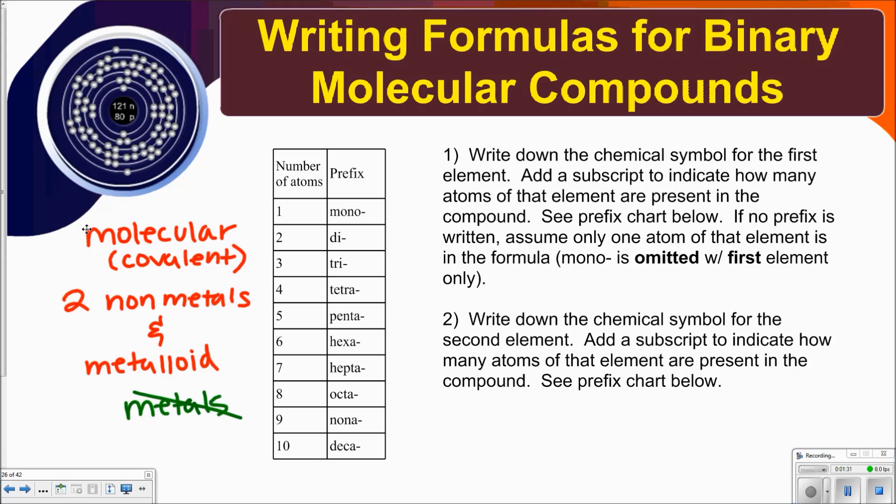Then you'll write down the chemical symbol for the second element. Add a subscript to indicate how many atoms of that element are present in the compound. Again, see the prefix chart. So this is the prefix chart that I am referring to. Take a moment to write it down. It's also on your review.